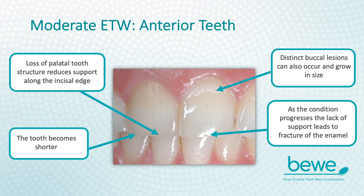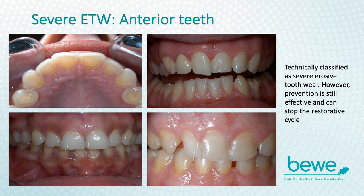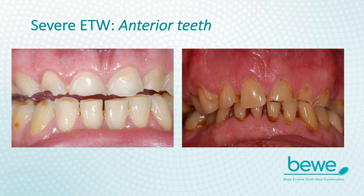As erosive tooth wear progresses, anterior teeth may show signs of darkening from the underlying dentine, grooving or wear along the incisal edge, and shortening of the clinical crowns, which makes it difficult to restore. For some patients, the pattern is asymmetrical and it is often difficult to be precise about the cause. Once it gets to this stage, treatment becomes increasingly complex with a higher level of maintenance necessary for the patient.